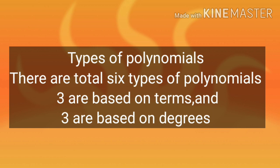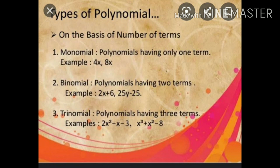Now we will study types of polynomials. There are 6 types in total: 3 based on terms and 3 based on degrees. If one term is there it's known as monomial, if two terms it's known as binomial, and if three terms it's known as trinomial.